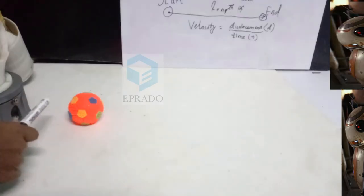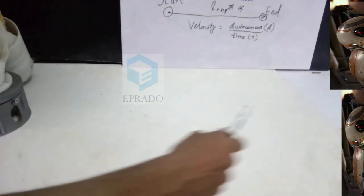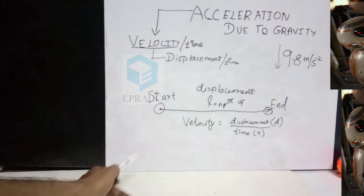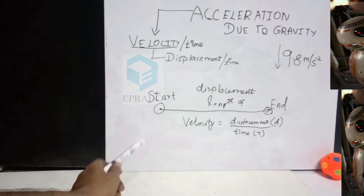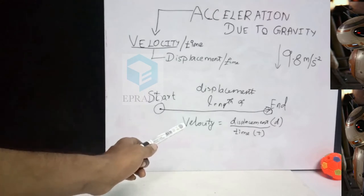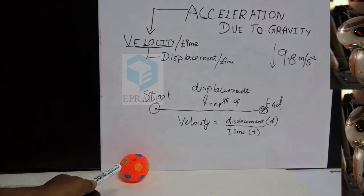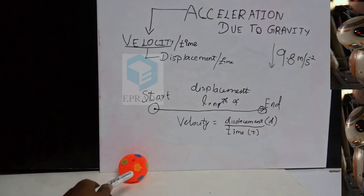Now I am going to tap this ball continuously. Let us see what happens. For every tap we provide on this ball, the velocity of this ball increases with respect to time. So the ball can now reach the same length faster. That is, the velocity increases every time we provide a force on the ball.